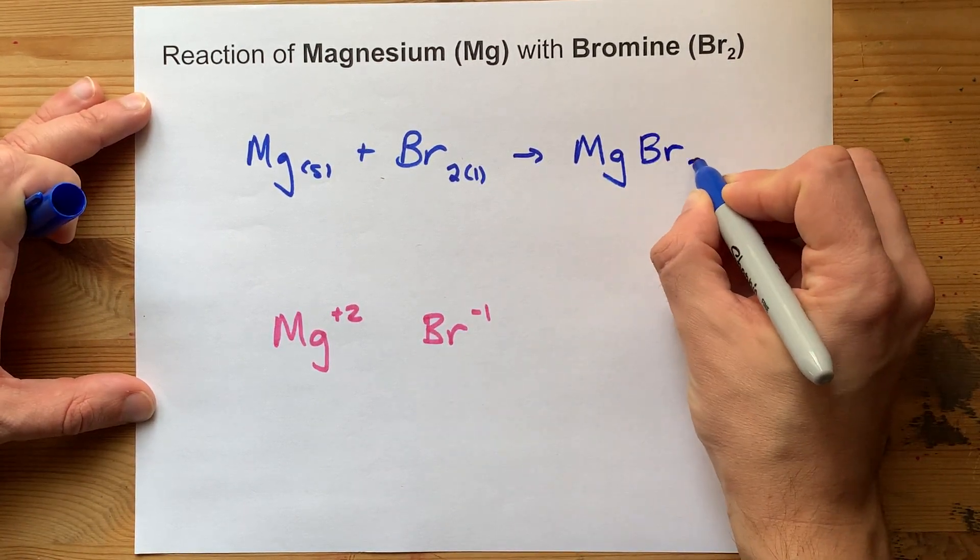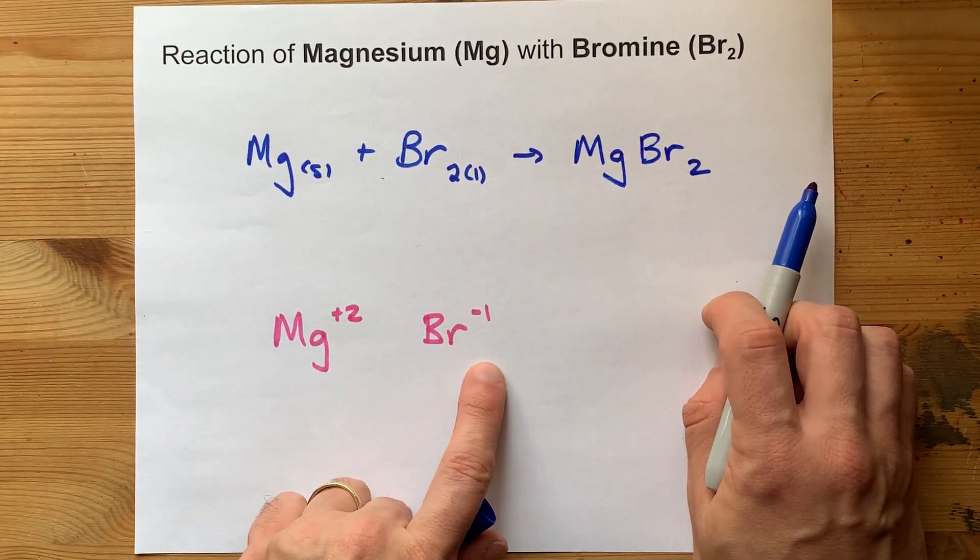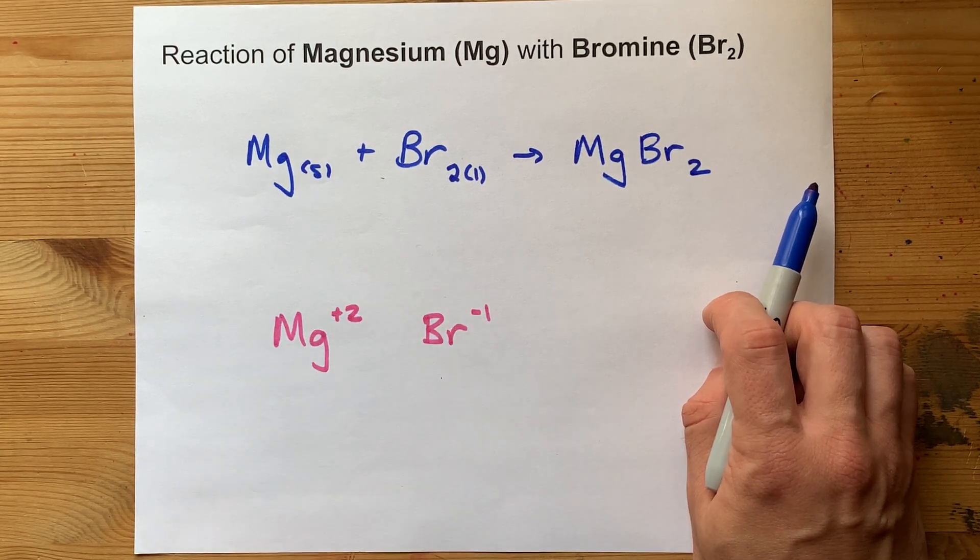And Br2, because the two from the magnesium crisscrosses down, you need two bromines to cancel out the charges.